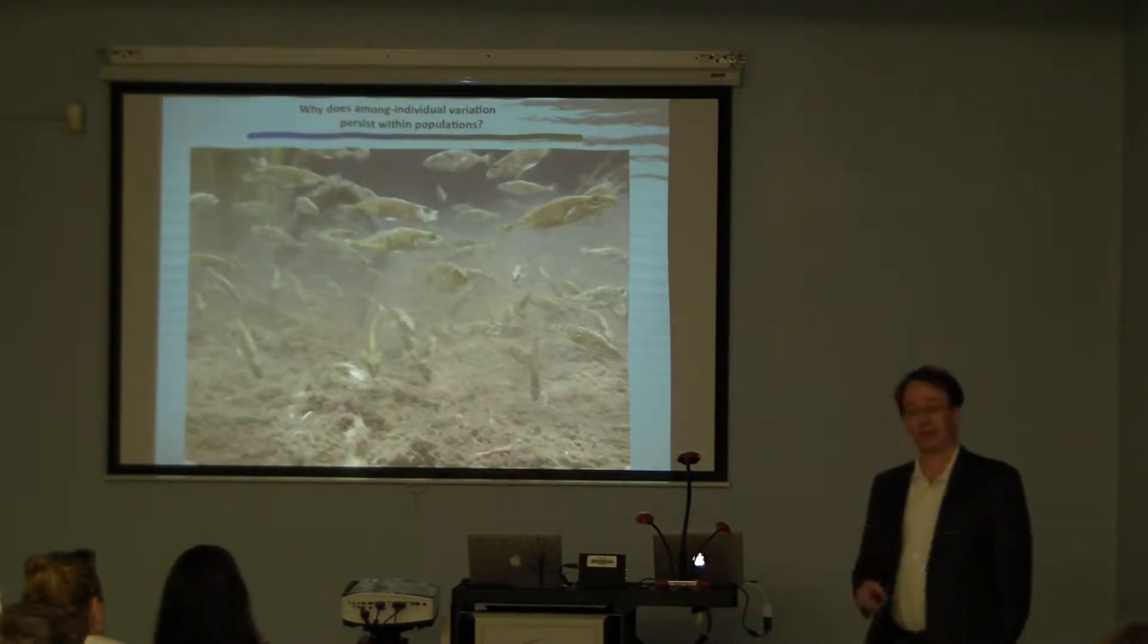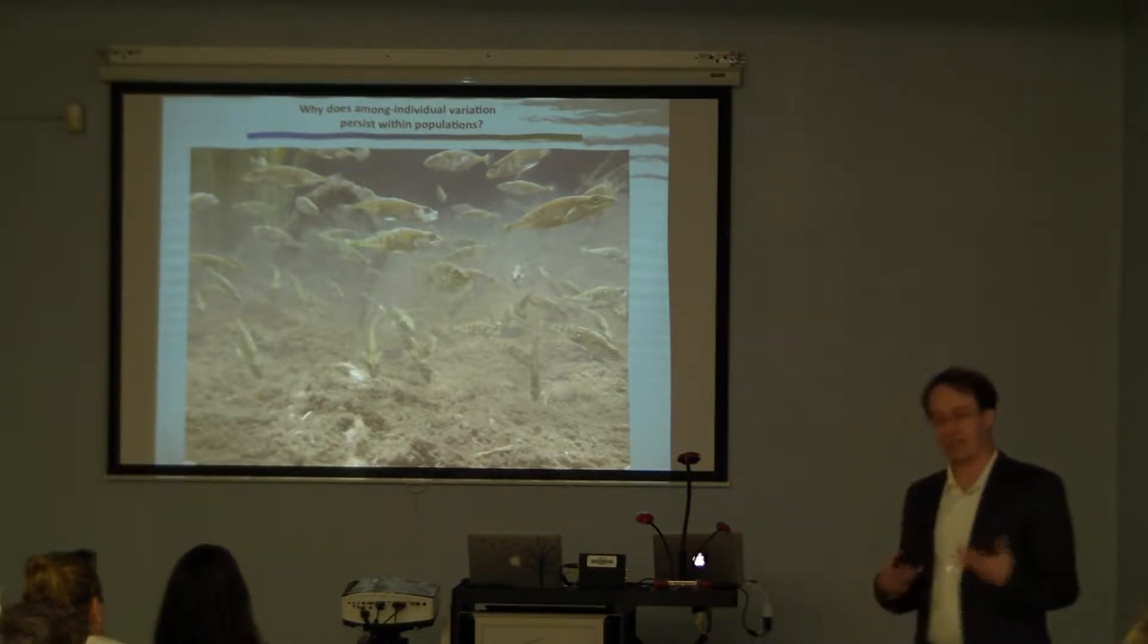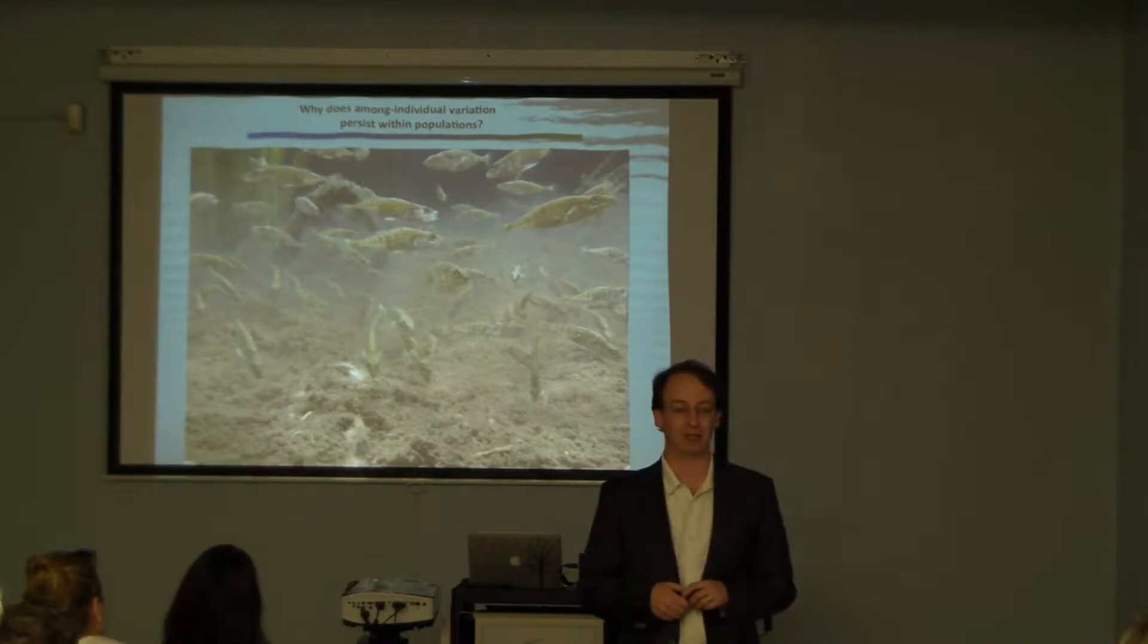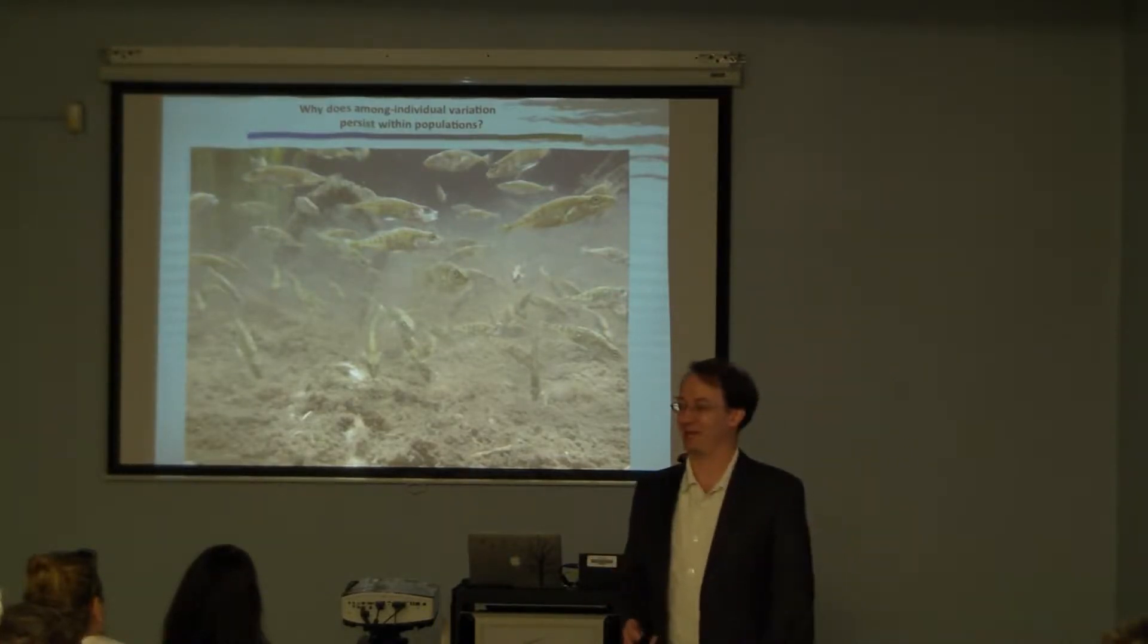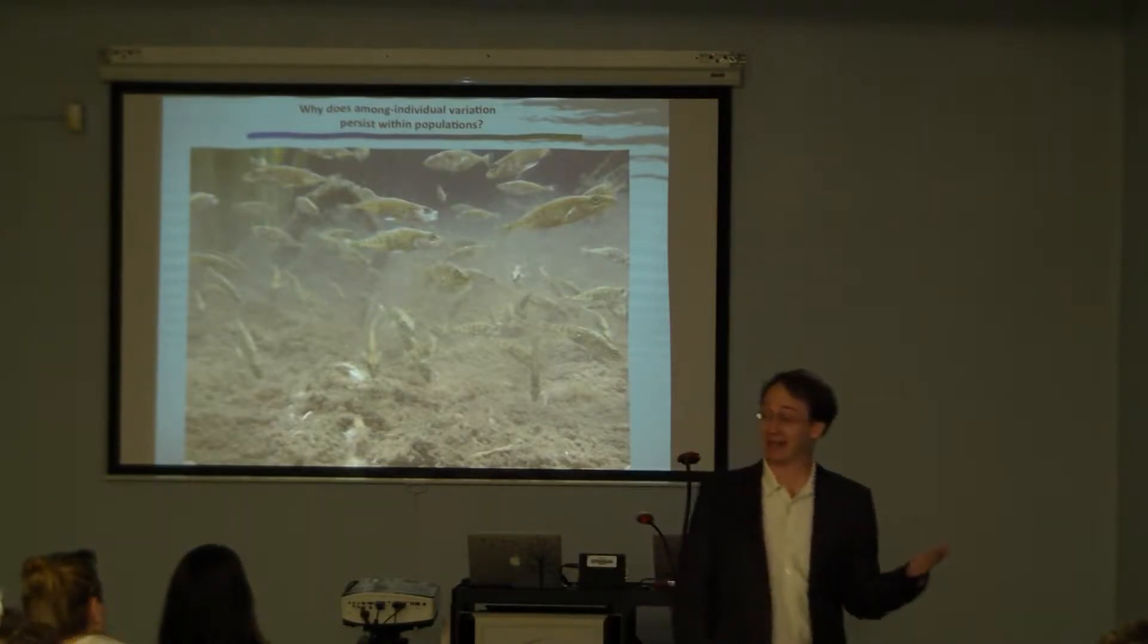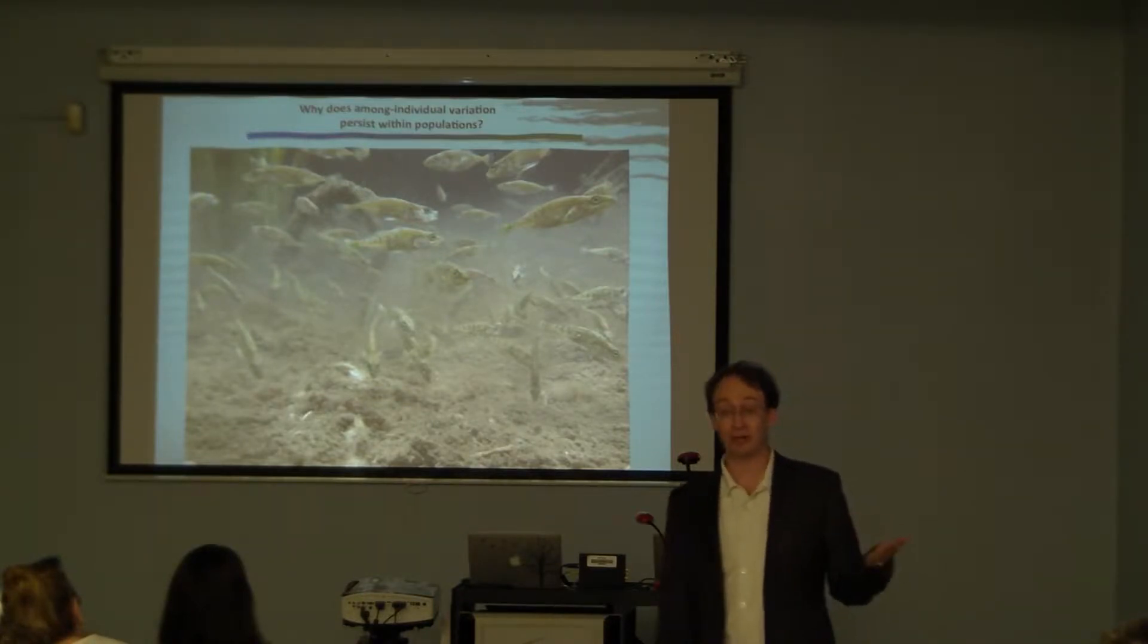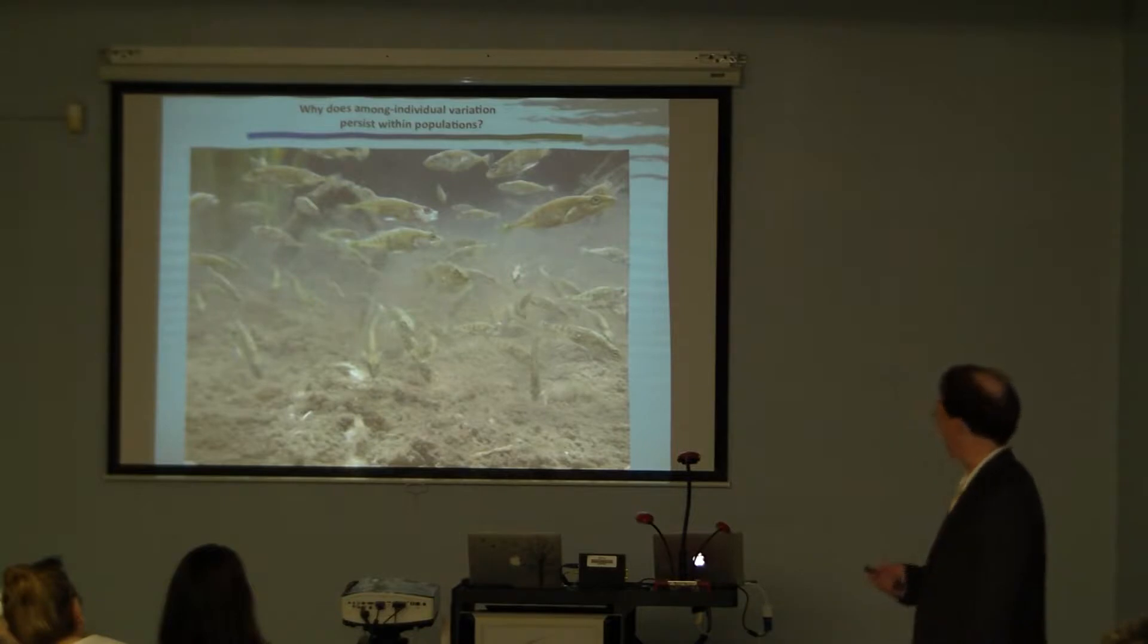And the first question is what really formed a lot of the core of my research, is the question of why does among-individual variation persist in populations? We can look at a school of fish and say, gee, they're fish, they all look the same to me. But every single one of the individuals here is genetically unique, they're morphologically unique, their physiology is different from each other, and that variation matters in fundamental ways. And that actually poses a huge puzzle. In fact, one of the grand challenges in evolutionary biology is explaining why we're not all clones.